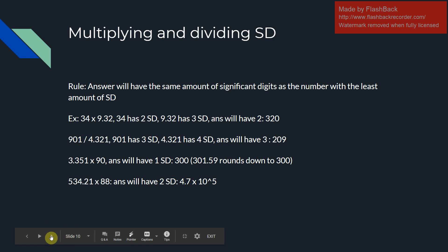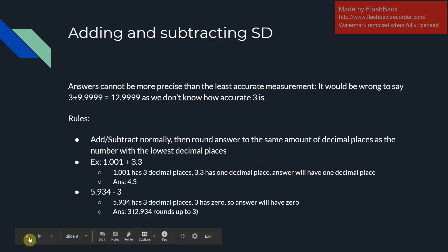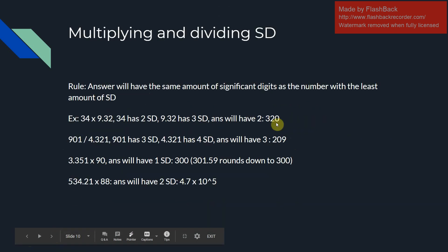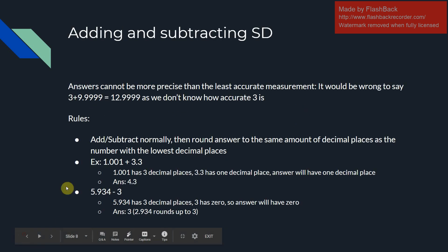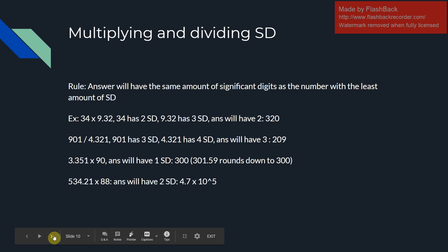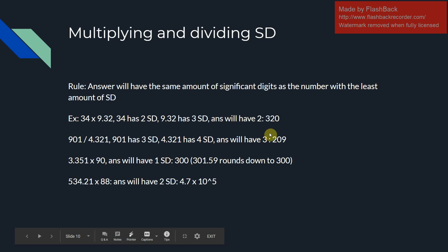Now, multiplying and dividing significant digits. The rule is the answer will have the same number of significant digits as the number with the least amount of significant digits. When adding and subtracting it's about the lowest decimal places; when multiplying and dividing it's about significant digits. It's very important to know this distinction — if you mix them up, your answer will be considered wrong. For example, 34 times 9.32 — two significant digits versus three, so the answer has two: 320, where the trailing zero is insignificant.